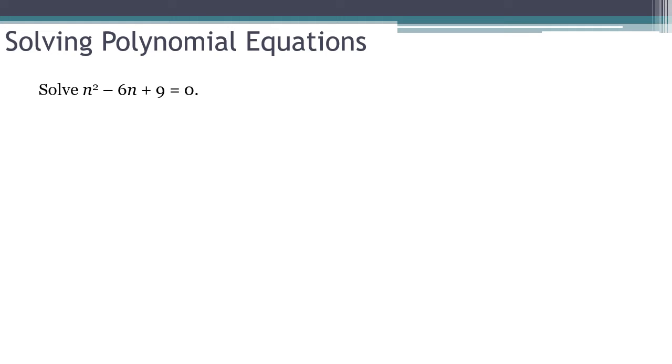All right, so this guy, the last one here. And that's more kind of slightly unusual case. It's already equal to 0, which is great. So let's see if it factors. I believe this will be n minus 3 times n minus 3 equals 0.